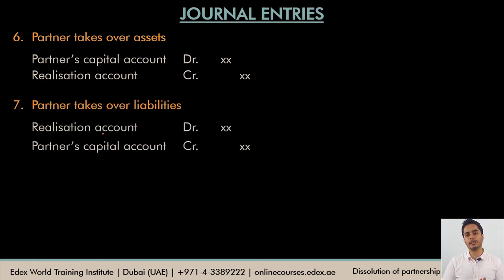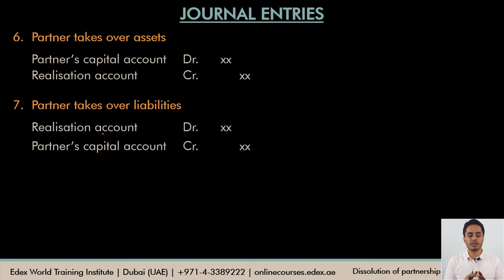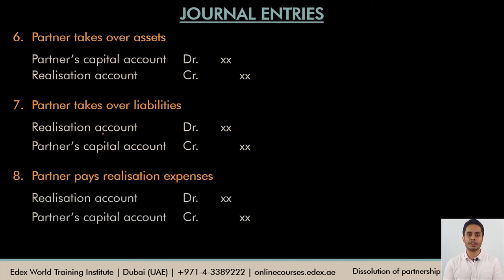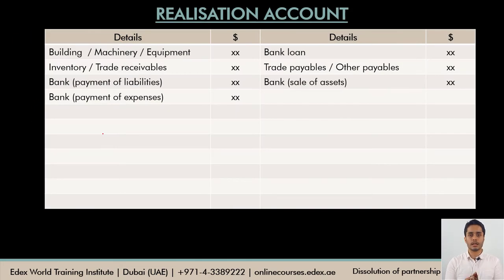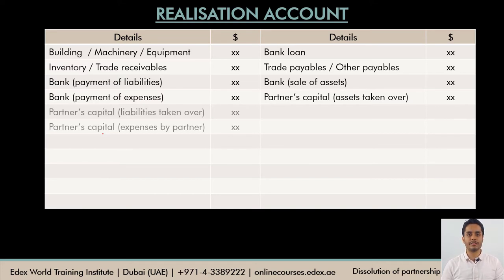It could also happen that partners might decide to take over liabilities and pay them on behalf of the firm. In that case, the realization account would be debited and the partner's capital account is credited, because the firm needs to compensate the partners for taking on the firm's liabilities. Partners may also agree to pay the realization expenses on behalf of the firm — the entry would be exactly similar: realization account debit and partner's capital account credit, as partners must be compensated for paying those expenses.